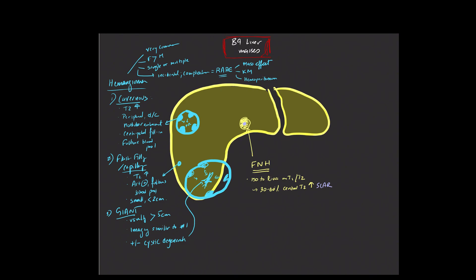When you give contrast in the arterial phase, FNHs will demonstrate homogeneous arterial hyper-enhancement. And when you look at it on the portal venous and equilibrium phases, these will be relatively iso-intense to the liver. So the best sequence to pick up FNHs really is going to be that arterial phase where they'll light up.